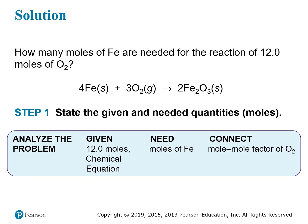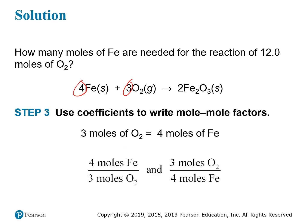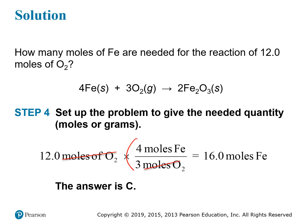Here it walks you through step by step: analyze the problem in terms of what you're given and what you need. The thing that connects them is the mole-to-mole factor. The mole-to-mole factor is used as a conversion factor between moles of oxygen and moles of iron. The coefficients directly from the chemical equation are then used to create the conversion factors, and the correct conversion factor is chosen based on canceling out the units and leaving the unit you want.